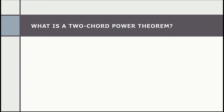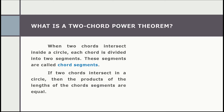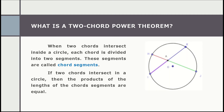Let's talk about the first one: the two-chord power theorem. It states that when two chords intersect inside a circle, each chord is divided into two segments, and these segments are called chord segments. If two chords intersect in a circle, then the products of the lengths of the chord segments are equal.